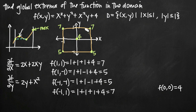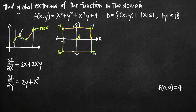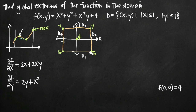Now I've done the critical points on the inside and all four corners. I need to address the line segments connecting the four corners. Let's label these line segments: d sub 1, d sub 2, d sub 3, and d sub 4. For each edge, we'll identify an equation describing the line segment in three-dimensional space, look for critical points along that line segment, and plug into the original function to find the value there. Let's start with d sub 1.